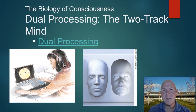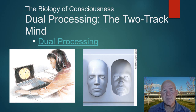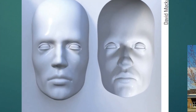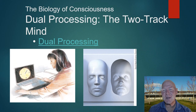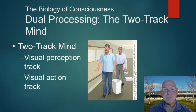Dual processing means there is processing going on in our unconscious that we're not even aware of. When we see something, we consciously perceive it, but beneath the surface the brain simultaneously processes color, form, depth, and movement in different regions. This is why, with an inverted mask that appears convex even though it's concave, someone will instinctually reach in to flick off a fly even though they don't consciously perceive the mask's true shape.